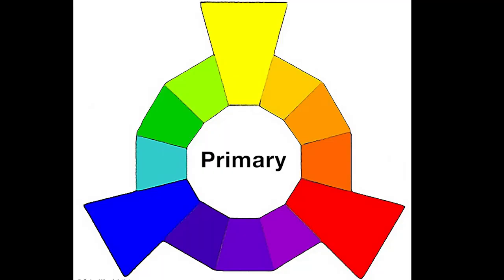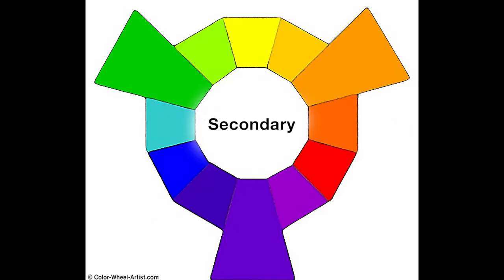Number one: primary colors. Primary colors are the colors that are found in nature, which are red, yellow, and blue — basic stuff. From those we have the secondary colors: green, purple, and orange.